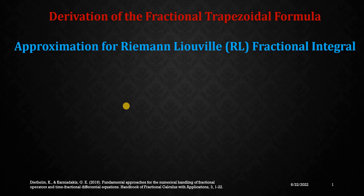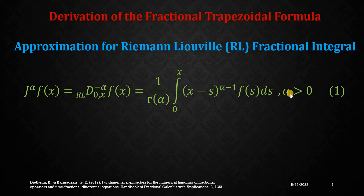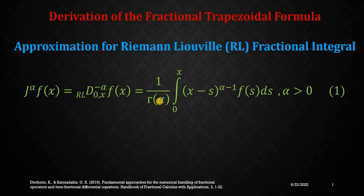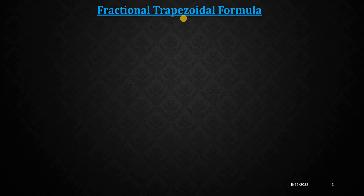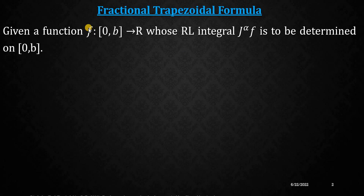The Riemann-Liouville fractional integral is defined by equation 1, wherein the term (x minus s) to the power (alpha minus 1) is what we call the kernel of the integral, and this integral has a coefficient 1 over gamma of alpha. This definition is also known as the left Riemann-Liouville fractional integral.